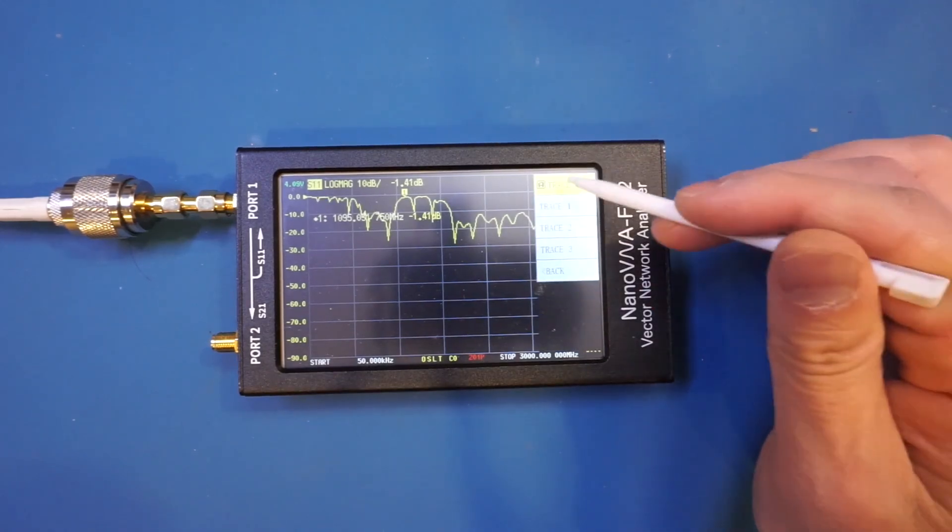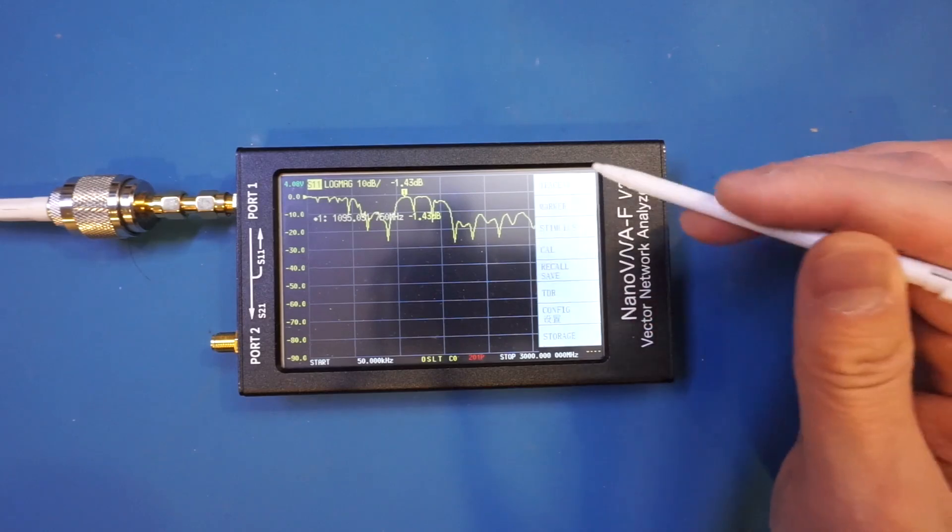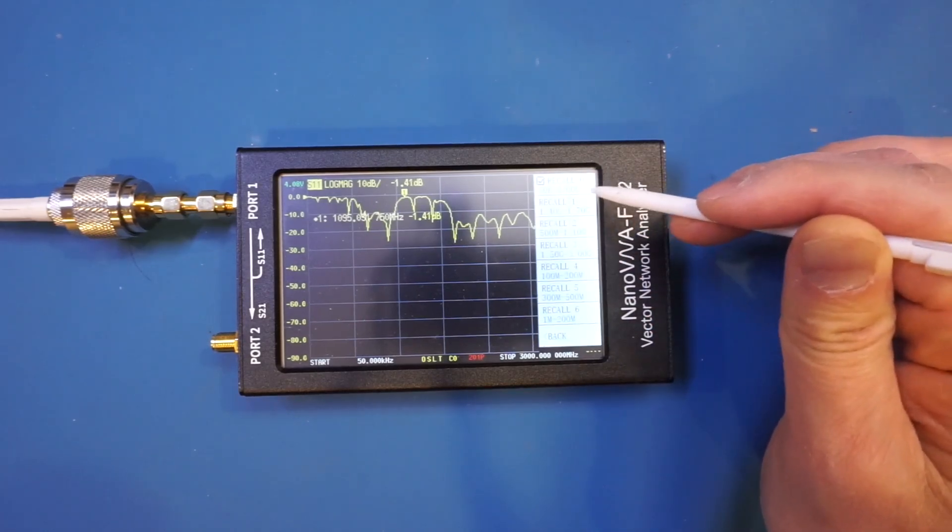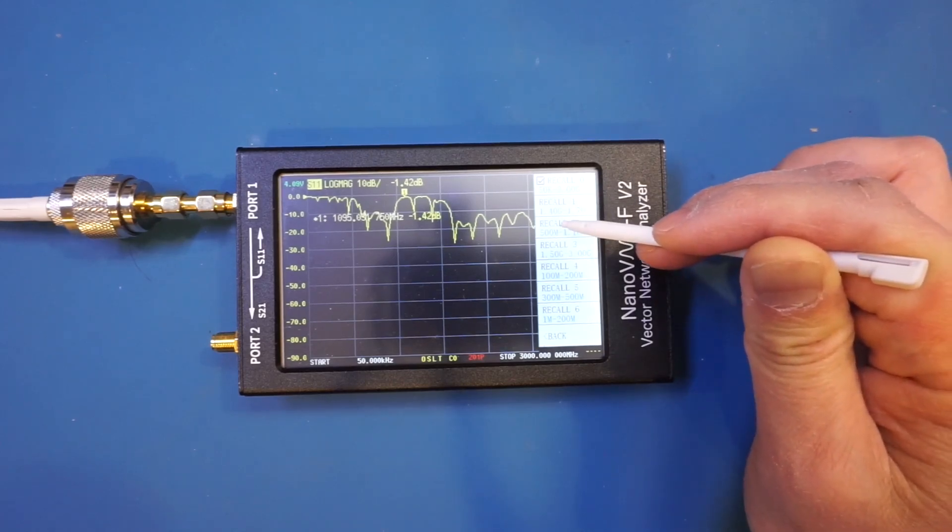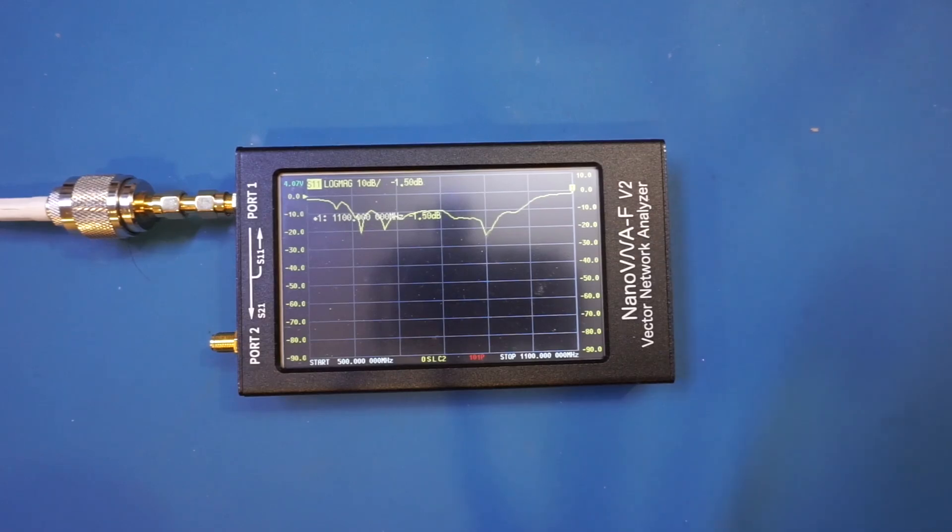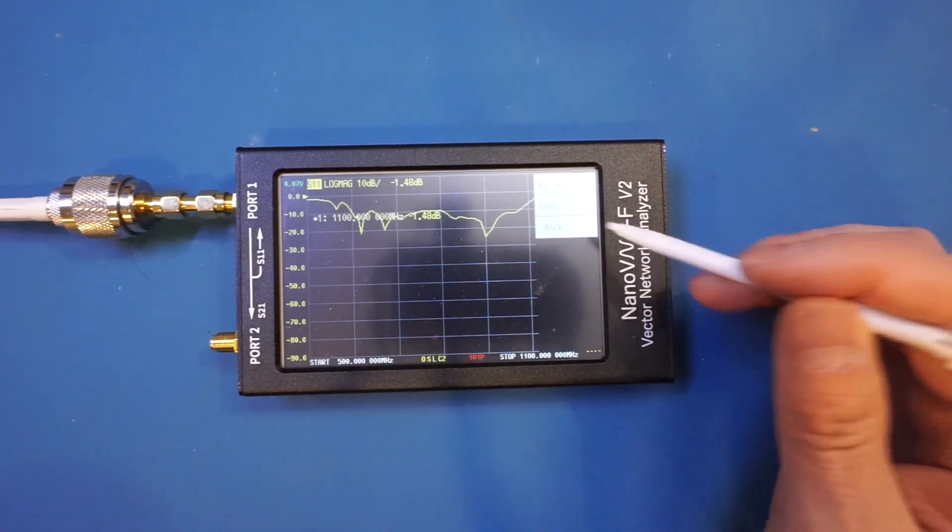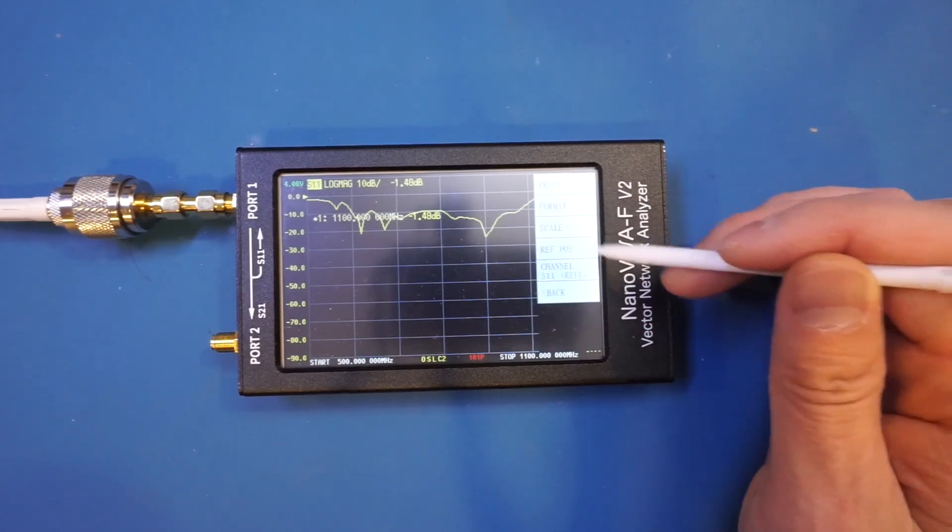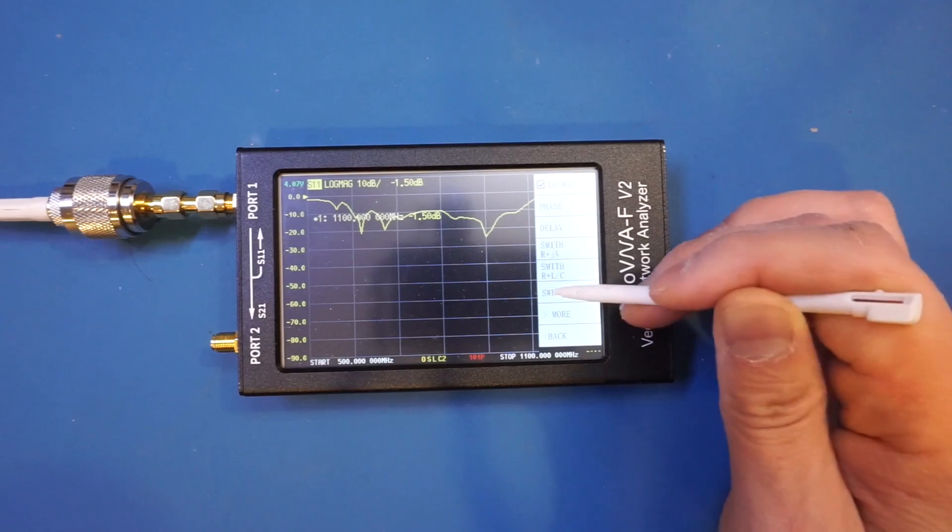Let's first take a look at the lower frequency band of the antenna. So for that I'm going to recall one of the traces I have already calibrated and that is between 500 and 1.1 gigahertz. So this includes our first frequency band between 600 and 960 megahertz. And now let's change it to SWR plot so hopefully we will see it a little bit better here.